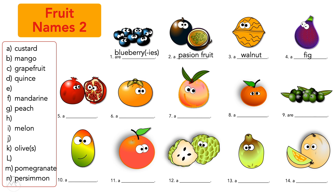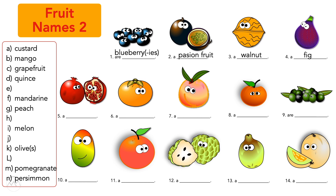Number five — This is a pomegranate. Correct! This is a pomegranate.